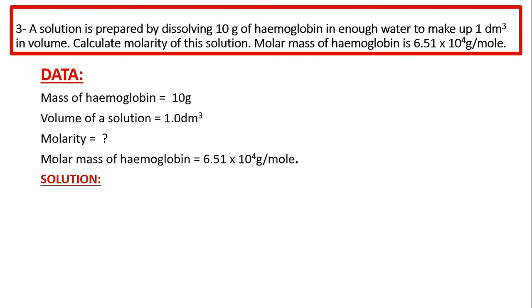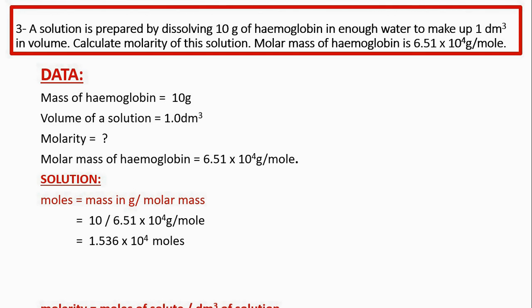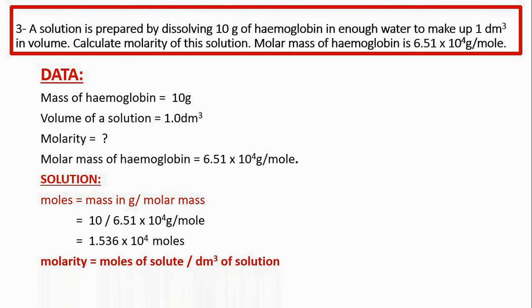Solution: to find molarity, we must first find the number of moles. Moles = mass in gram divided by molar mass = 10 divided by 6.51 × 10⁴ = 1.536 × 10⁻⁴ moles. Now molarity = moles of solute divided by dm³ of solution = 1.536 × 10⁻⁴ divided by 1 = 1.536 × 10⁻⁴ M. This is our answer.